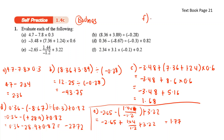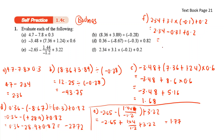For F: 2.34 plus 3.1 times negative 0.1 plus 0.2. We do multiplication first: 3.1 times negative 0.1 gives negative 0.31. So we have 2.34 minus 0.31 plus 0.2, which gives us 2.23.